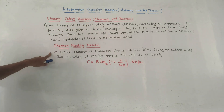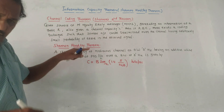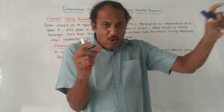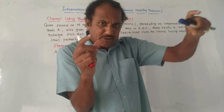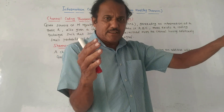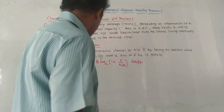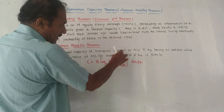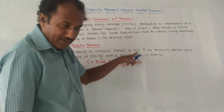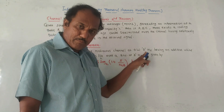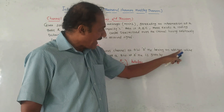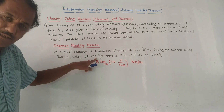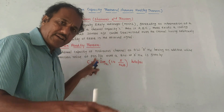The statement of the Shannon-Hartley theorem: channel capacity means the maximum amount that a channel can fully transmit, which is called channel capacity. So the channel capacity of a continuous channel of bandwidth B Hertz having an additive white Gaussian noise of power spectral density N₀/2...